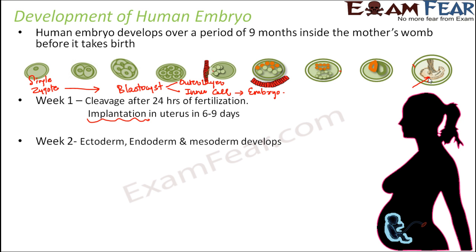These three germ layers give rise to different tissues and organs. The ectoderm, which is the outermost layer, forms the skin, glands, etc. The mesoderm gives rise to muscles, connective tissues which help in movement, and organs like the heart and blood vessels. The endoderm gives rise to the epithelium of various body parts — for example, epithelium of the mouth, tongue, urinary bladder, gallbladder, liver, and pancreas.